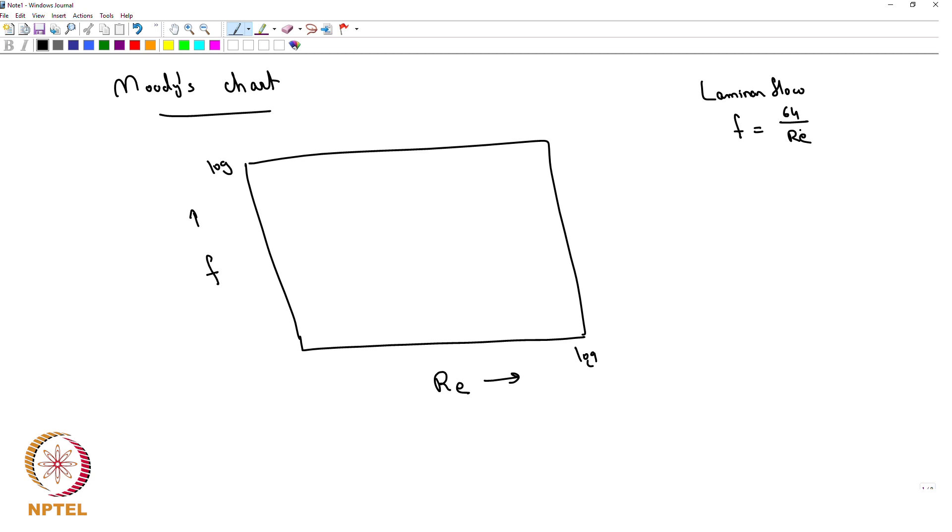So if I plot it in a log-log coordinate system, how would it look like? It will be a straight line of slope minus one.